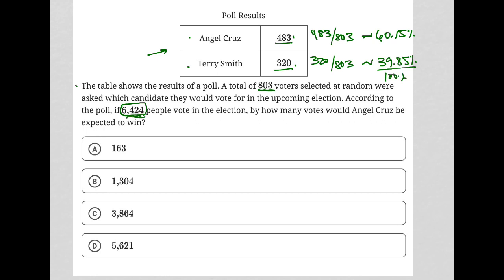Since there are actually 6424 people voting, we expect Angel Cruz to receive 60.15 percent of 6424. On the calculator, 6424 times 0.6015 equals 3,864 votes.